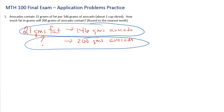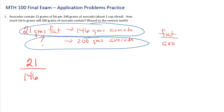You can make a fraction out of this information and then make another fraction and just solve. Let's put fat on top. Do you have to put fat on top? No — what you have to do is be consistent. So if I put 21 grams of fat in the numerator compared to 146 grams of avocado in the denominator, I set it equal to the next ratio: fat in the numerator, which is x, over 200 grams. To solve a proportion, you cross multiply.